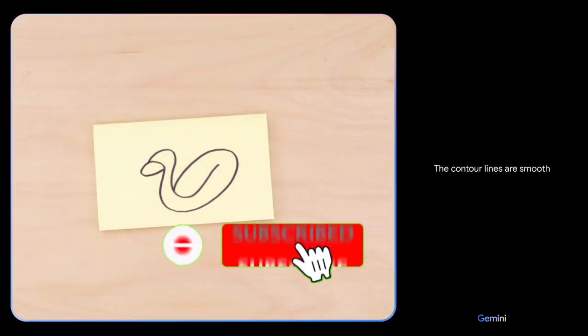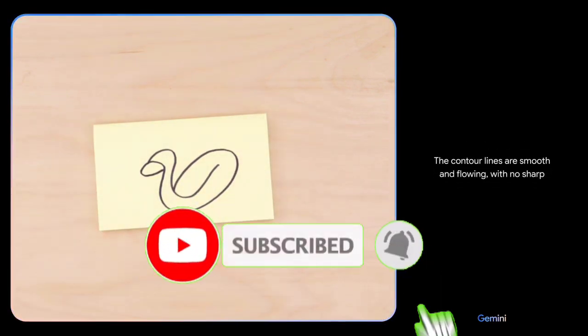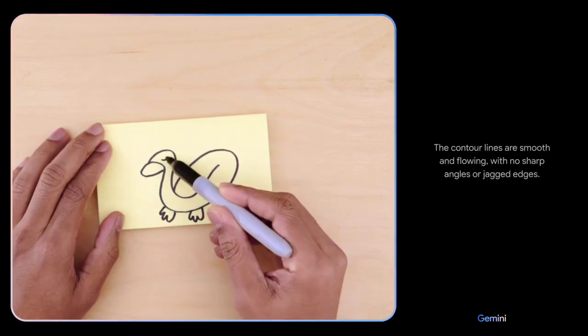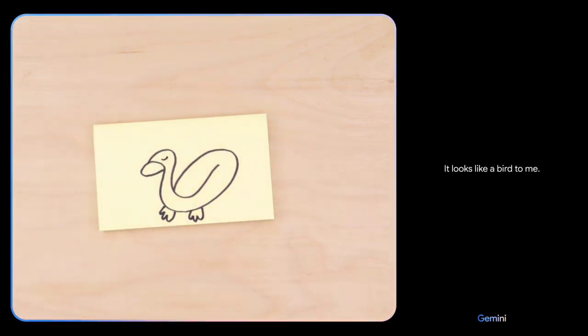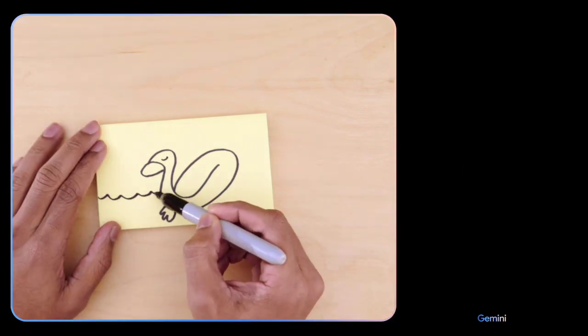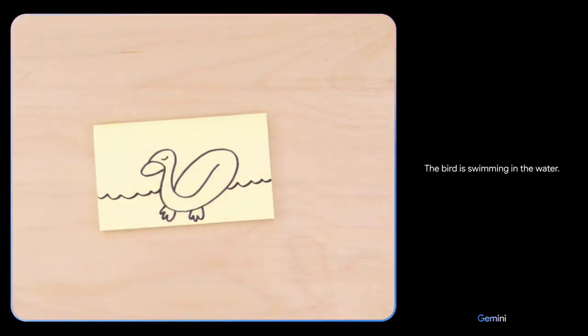What about now? The contour lines are smooth and flowing with no sharp angles or jagged edges. It looks like a bird to me. Hmm, what if I add this? The bird is swimming in the water. It has a long neck and beak. It is a duck. Yes.